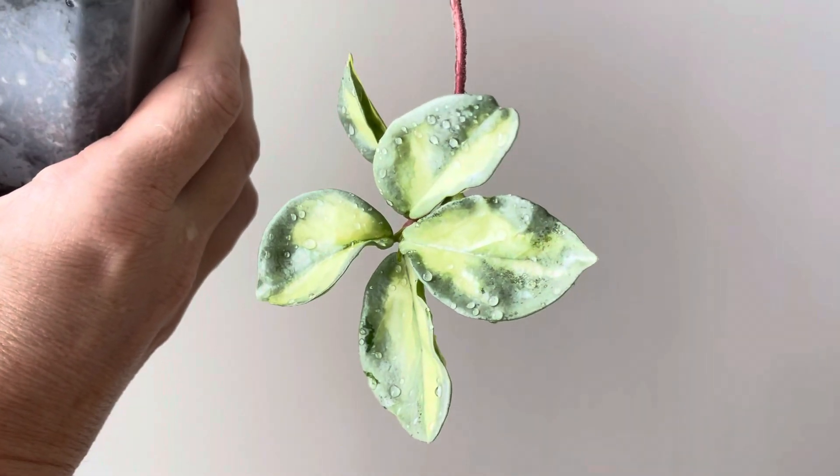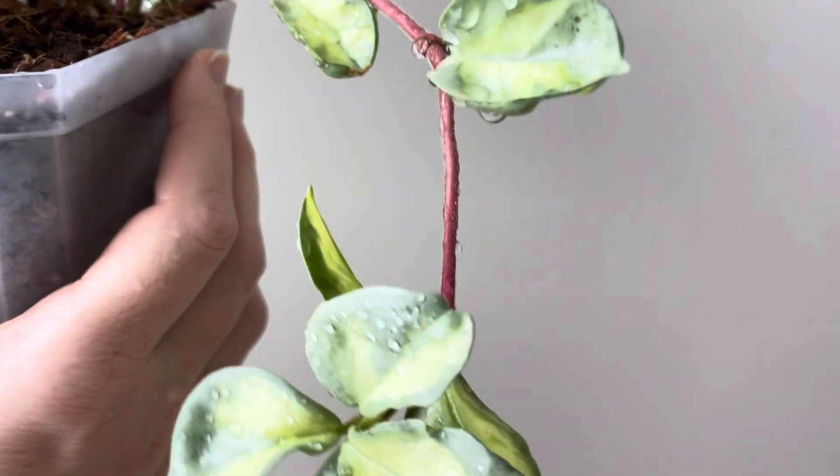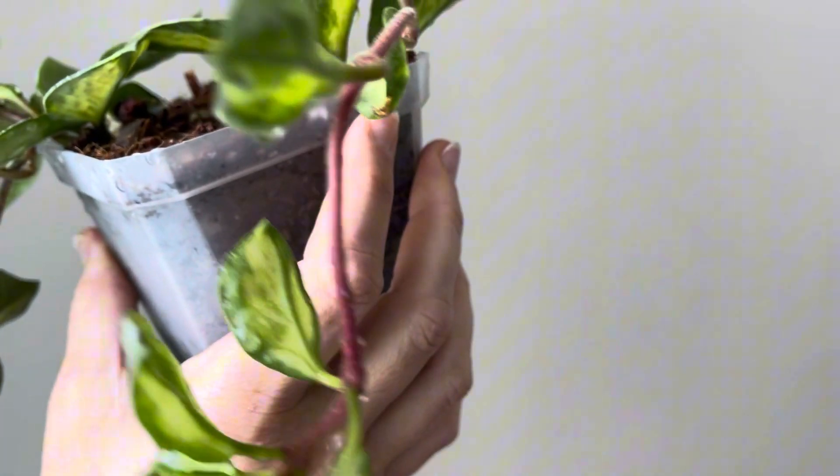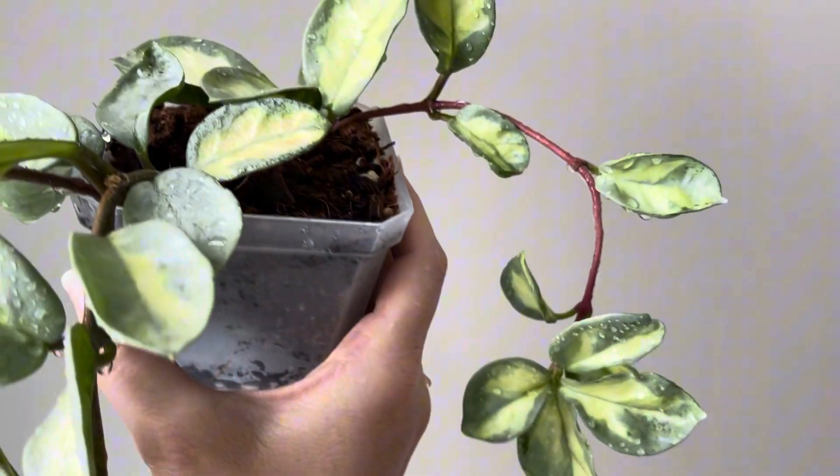This is my Hoya Argentina Princess. Look at that beautiful pink vine. When you have a vine like that, it's guaranteed to get some very nice variegation on these plants.